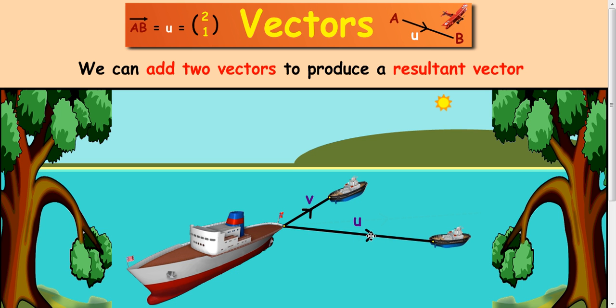When you're adding vectors, there's an easy way to do it. If this tug here is pulling this boat, and this tug is also pulling this boat, the boat's only going to move in one direction. To figure out what direction it's going to move in, what we do is we move the vectors and put them nose to tail.